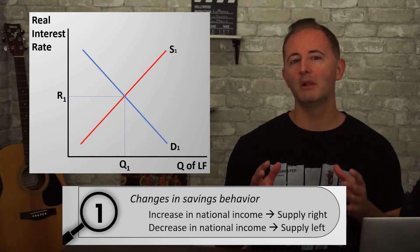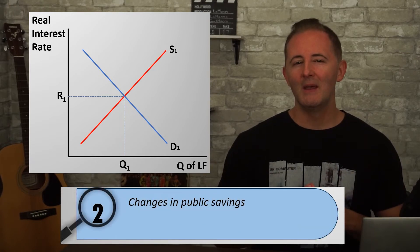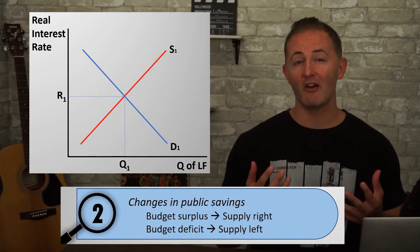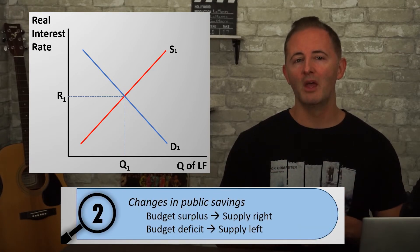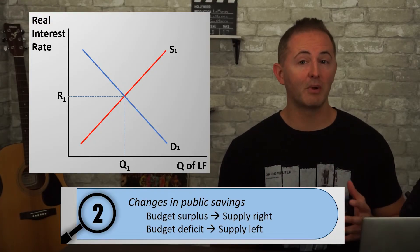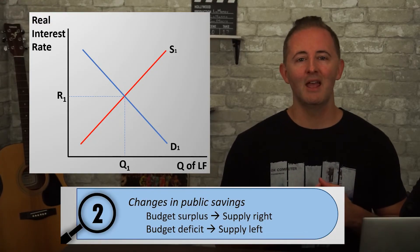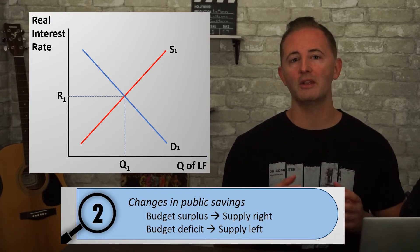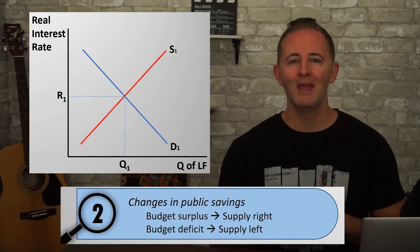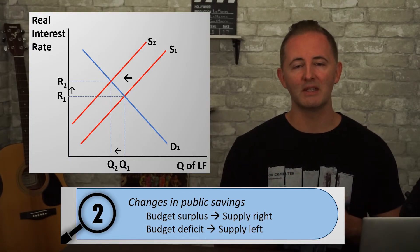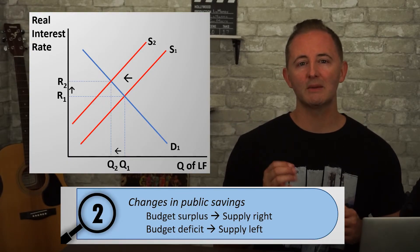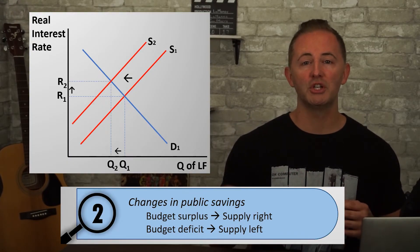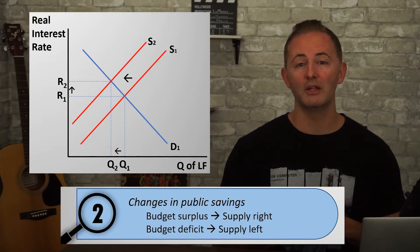The big one is about public savings — the difference between tax revenue and government spending. When a government runs a larger budget deficit, meaning that spending is greater than tax revenue, it reduces public savings, shifting the supply curve to the left and pushing up the real interest rate.